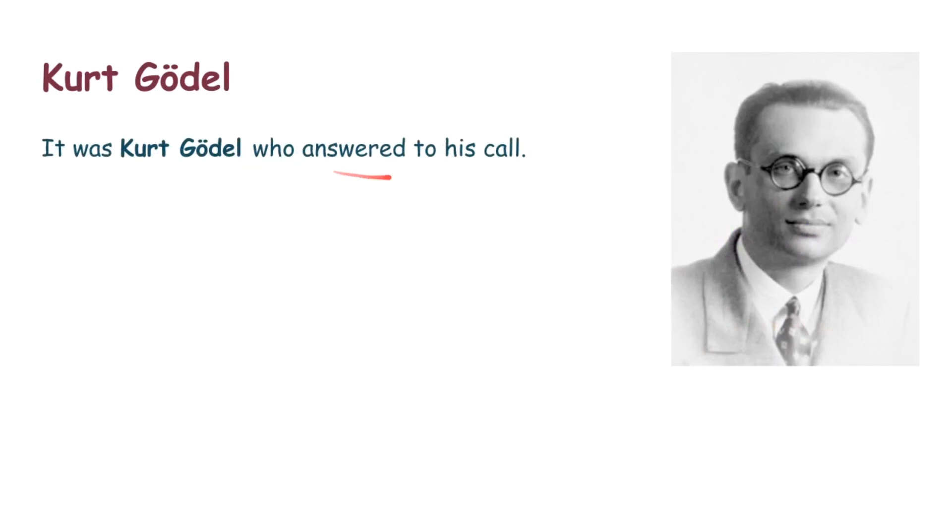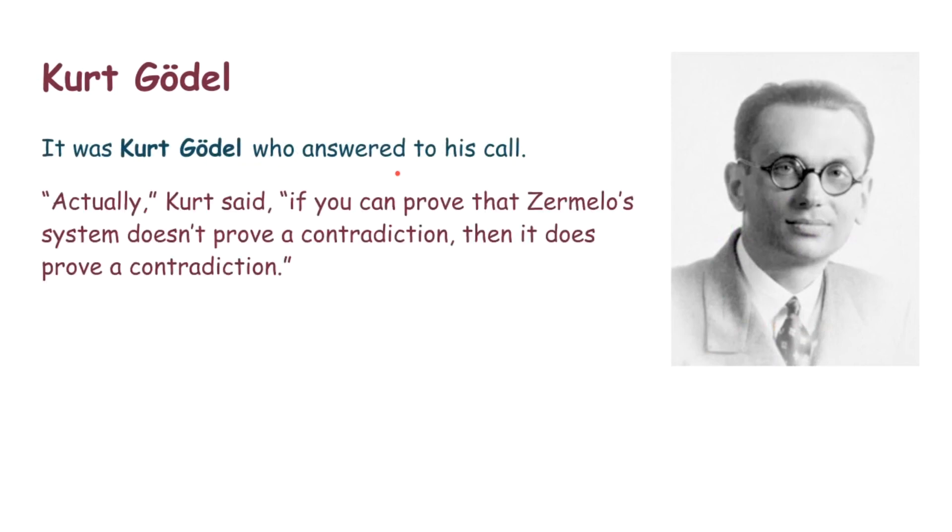So Kurt Gödel answered this question, the question of whether or not mathematics was consistent. And he said, if you can prove that Zermelo's system doesn't prove a contradiction, if you can prove that it's consistent, then it, oddly enough, does prove a contradiction. So it is inconsistent if you can prove that it's consistent. Doesn't mean if it's consistent it's inconsistent. It means if you can prove that it's consistent, then it isn't consistent.